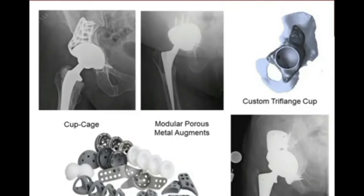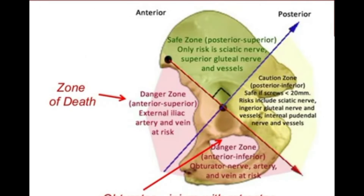Regarding screw placement in the revision acetabulum: the danger zone is the anterior superior zone — the so-called zone of death — where a screw into the external iliac artery and vein can quickly be fatal. Keep screws out of the anterior superior zone if possible. The anterior inferior zone puts the obturator artery at risk, which can lead to significant bleeding but is rarely life-threatening.